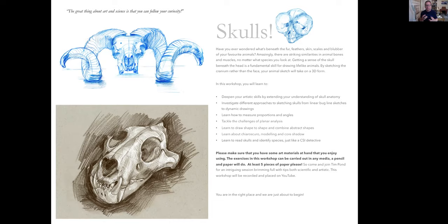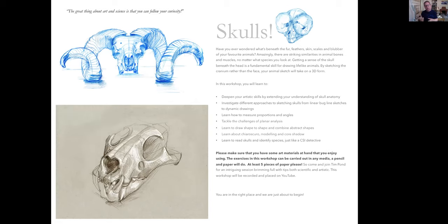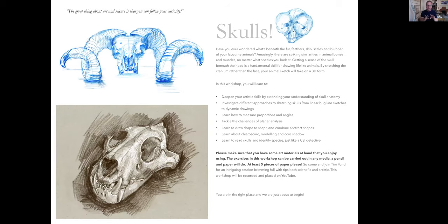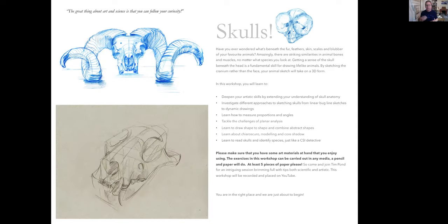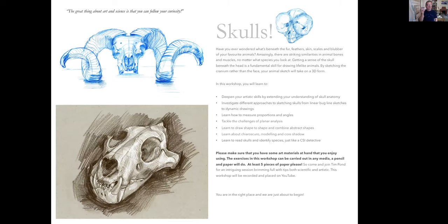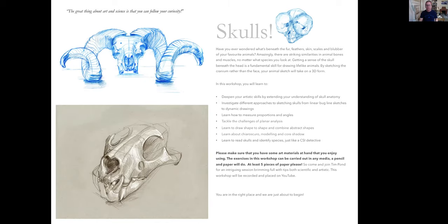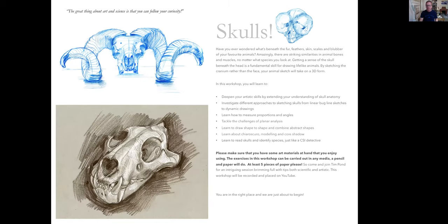Imagine we're picking up a skull on a walk. We can actually work out whether it's a predator or prey, a nocturnal animal, just by looking at its teeth and eye sockets. So we're about to begin. These exercises can be taken with any media — a simple coloring pencil or whatever you feel comfortable with. You're going to need at least five pieces of paper to be able to take part.